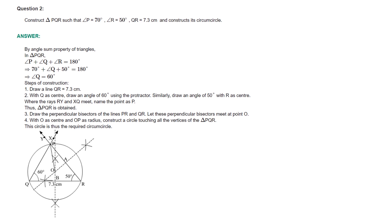Draw line segment QR of 7.3 cm. With Q as center, draw an angle of 60 degrees using the protractor. Similarly, draw an angle of 50 degrees with R as center. Where rays from R and Q meet, name the point as P. Thus triangle PQR is drawn. Then draw the perpendicular bisectors of any two sides. Let these perpendicular bisectors meet at point O. With O as center and OP as radius, construct a circle touching all the vertices of triangle PQR. This circle is the required circumcircle.